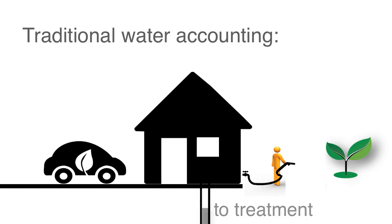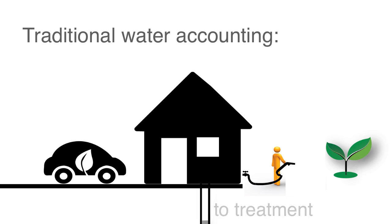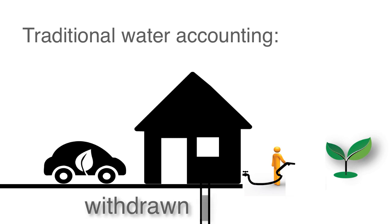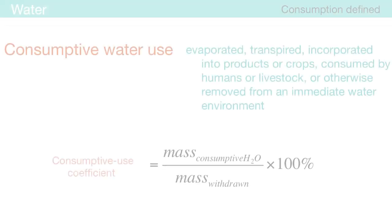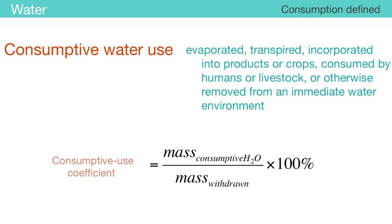When the water is used and then returned to the closed system, as is often the case for water used in residential homes, we consider this water withdrawn. The water returned to the municipal system then requires treatment to be used again. When the water is used and exits the closed water system, that water is consumed. Consumptive water use is defined as use that removes water from the local water supply.